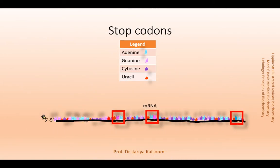The codons UAA, UAG, and UGA are the termination codons. When these are encountered, protein synthesis stops. These are also called stop codons or nonsense codons.